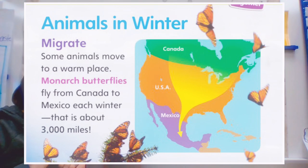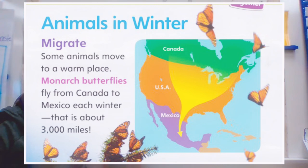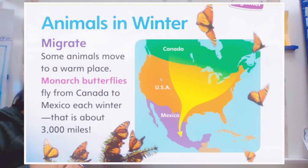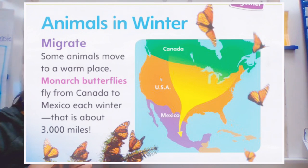So go ahead and take a look at this weekly launch page. It says "Animals in Winter." The first section is called migrate, and the picture of the map with the butterflies goes with this section. It says: some animals move to a warm place. Monarch butterflies fly from Canada to Mexico each winter — that is about 3,000 miles.